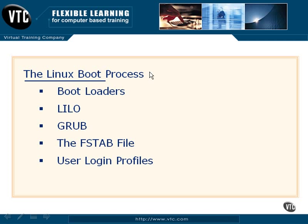Now that we have our Linux operating system installed, we're going to move forward into understanding how the boot process works. Starting off, we'll take a look at the available bootloaders — primarily what a bootloader does and some of the features each particular bootloader offers. Once we have a good idea of what bootloaders are available, we'll look more specifically at our two major bootloaders, including Lilo and Grub. After we look at configuration options and settings for both Lilo and Grub, we'll move into the FSTAB file and talk about the benefits and functionality it offers us.